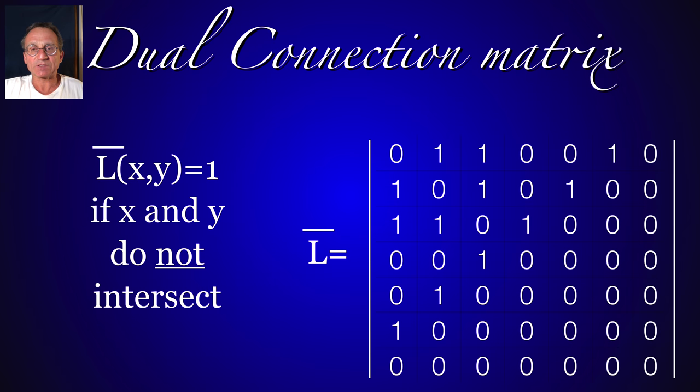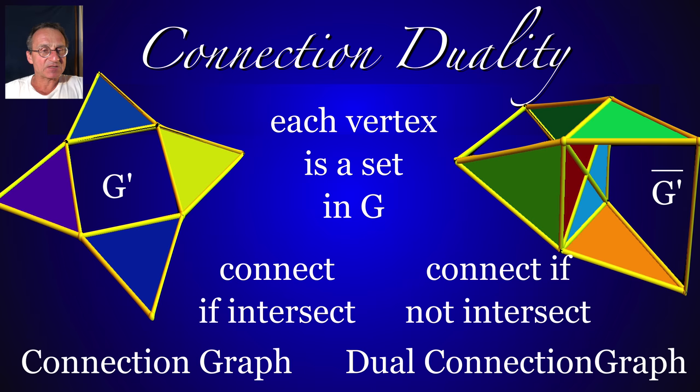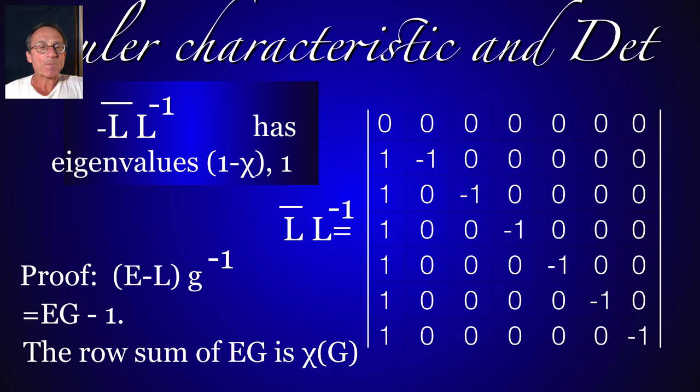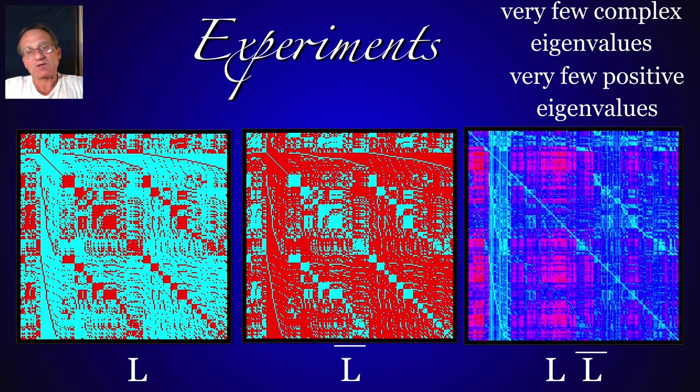A week ago, I started to look at the dual matrix, where the zeros and ones are reversed, and just experimented a little bit. The Euler characteristic or eigenvalues of the matrix L bar, L minus 1 is very interesting. And this follows from the energy theorem. There are some more experiments I'm doing right now.